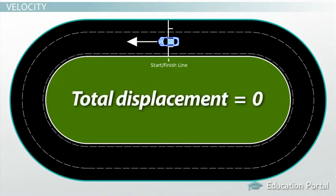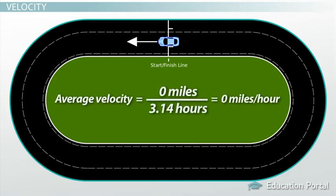Even though he drives many laps and covers 500 miles, he always starts and ends at the same point, making his total displacement for the entire race zero. To calculate his average velocity, average velocity equals zero miles divided by 3.14 hours equals zero miles per hour.